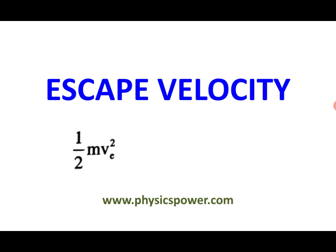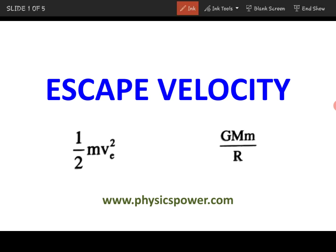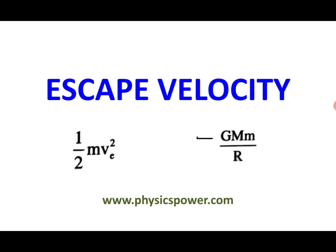For a particle of mass m, the kinetic energy expression is half mv squared, where VE indicates the escape velocity. A particle moving with this velocity has kinetic energy, and similarly it has potential energy. According to gravitation, the potential energy between two massive bodies is equal to minus GMm divided by R, where R is the distance between the masses and M are the masses. The negative sign indicates attraction between them — meaning the two massive bodies are in an attractive field. These two formulas are useful to get the expression for escape velocity.